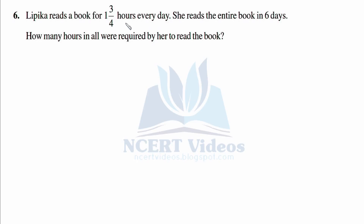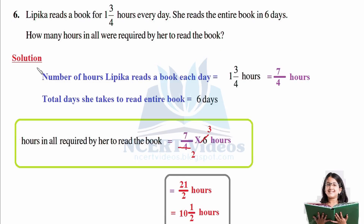Question 6: Lipika reads a book for 1 and 3/4 hours every day. She reads the entire book in 6 days. How many hours in total were required to read the book? It is simple — in one day she reads 1 and 3/4 hours, so in 6 days we multiply. Converting: 1 and 3/4 is 7 over 4 hours; total days is 6.